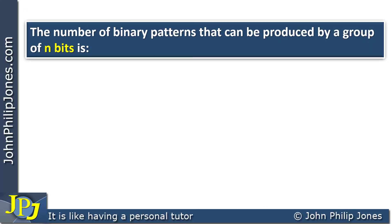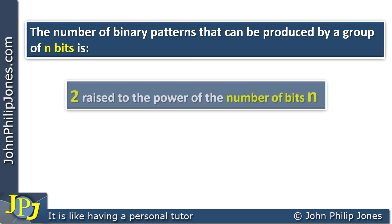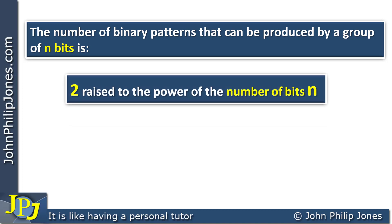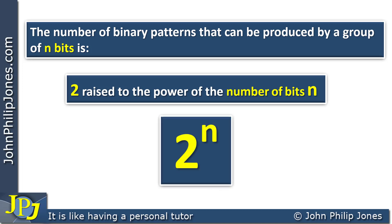The number of binary patterns that can be produced by a group of n bits can be calculated using the following: we take two and we raise it to the number of bits we are considering. The formula looks like this — two to the n — where n is the number of bits.